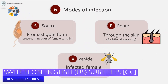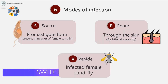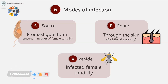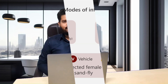Modes of infection: The infective form is the promastigote, present in the midgut of the female sandfly. Humans acquire the infection by the bite of an infected female sandfly. It can also be transmitted vertically from mother to fetus, by blood transfusion, and by accidental inoculation in the laboratory. The infected female sandfly is the vehicle of infection.